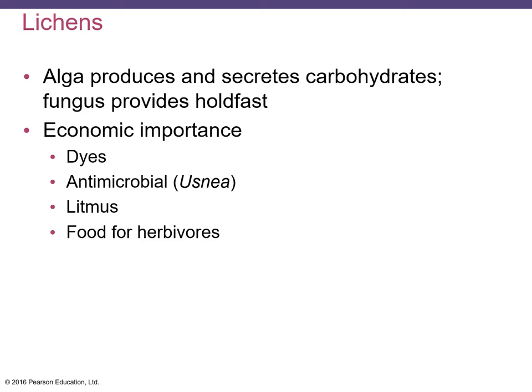While the algae gives up valuable nutrition, it is in turn compensated — it receives from the fungus both attachment via rhizines and protection from desiccation via the cortex. Lichens have considerable economic importance: in Asian, Greek, and other parts of Europe they have been used as dyes for clothing, and usnic acid from Usnea is also used as an antimicrobial agent. The dye used in litmus paper to indicate changes in pH is extracted from a variety of lichens.